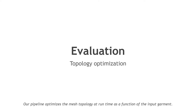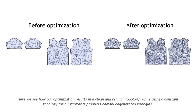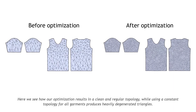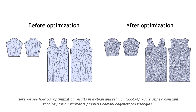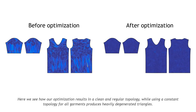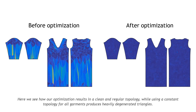Our pipeline optimizes the mesh topology at runtime as a function of the input garment. Here we see how our optimization results in a clean and regular topology, while using a constant topology for all garments produces heavily degenerated triangles.